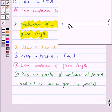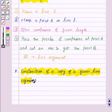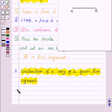So here at point A, we will place the pointer of the compass and we will cut an arc to get the point B. Thus, AB is the required line segment of the given length.